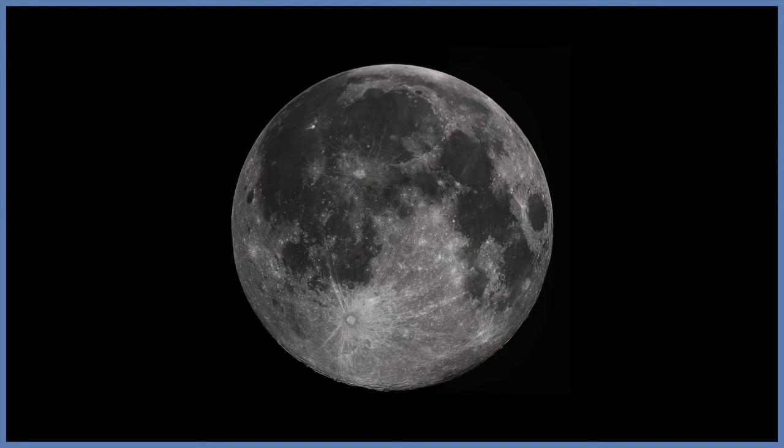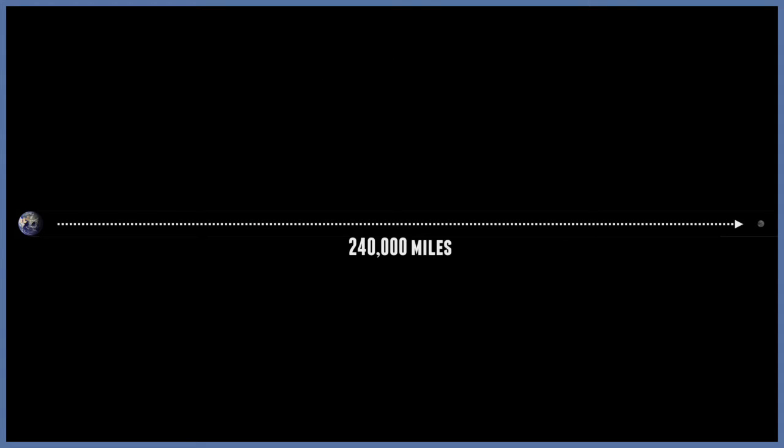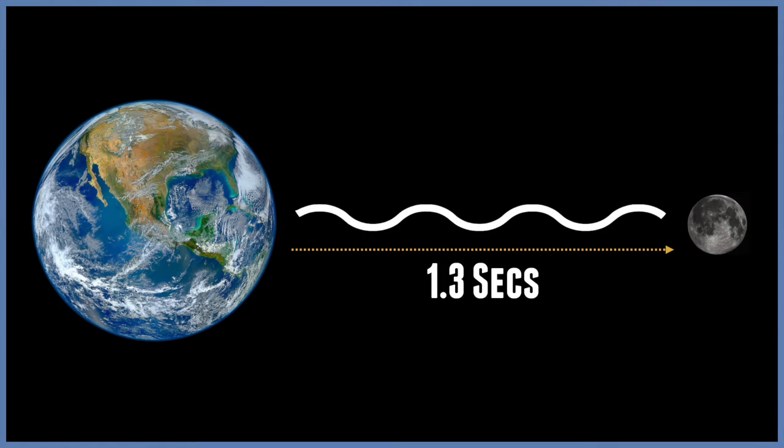Let's start with the solar system. First stop, the Moon. Its average distance is 240,000 miles, which means it takes approximately 1.3 seconds to get from the Moon to Earth if you travel at the speed of light.